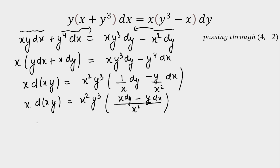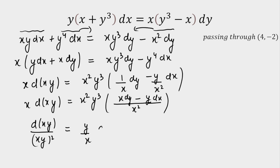Rewriting using xy and y/x: I need the term xy in order to integrate. Writing (xy)² as a factor, with y/x as the exact differential d(y/x) on the right side, we get x·d(xy) = (xy)² · d(y/x), and the left side with remaining factor y/x is clearly d(y/x). This is the exact differential of y/x.